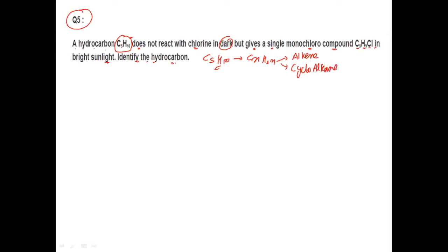Clear? You know that in bright sunlight, alkanes undergo substitution. Here, the C5H10 derivative will be a cyclo derivative. Now what we need to do is